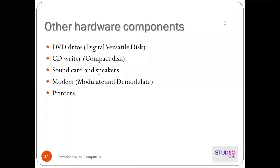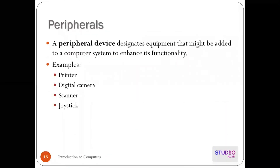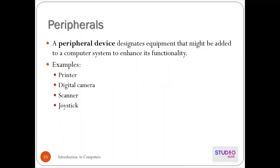Next, we have peripheral devices. Peripheral devices are devices used with the system to enhance performance or for the user. If the user needs external devices, they need to be attached. Peripheral devices designate equipment that might be added to a computer system to enhance its functionality, like a printer, digital camera, scanner, or joystick. For example, a printer is attached to the computer when needed.